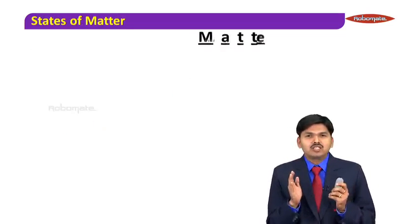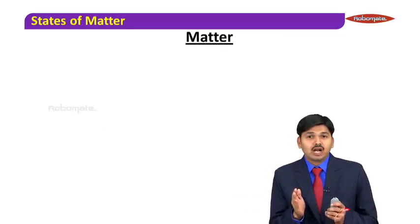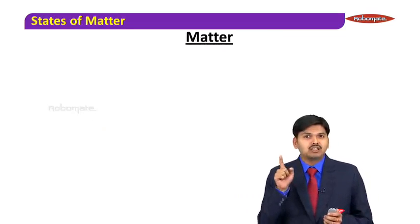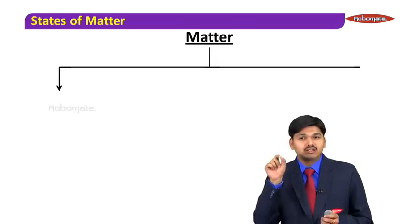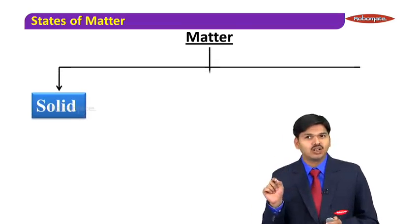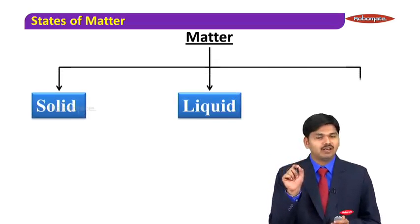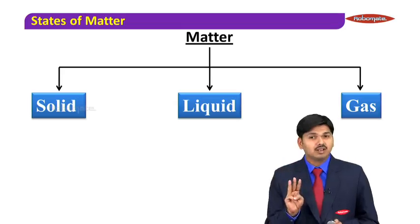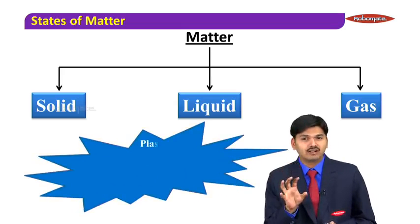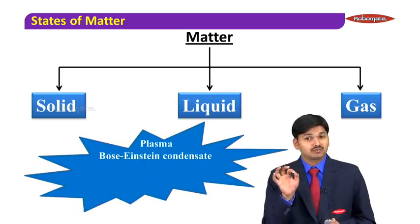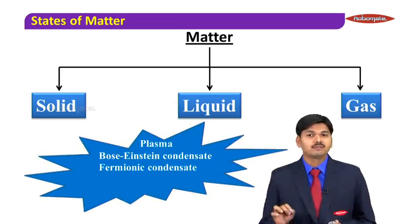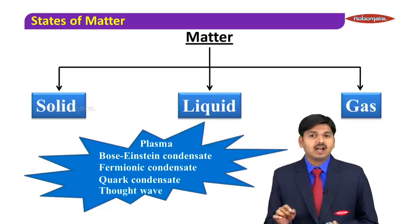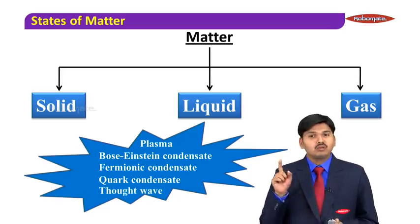If I concentrate on these, I come across a new classification — matter is going to get classified into three different types: solid, liquid, and gases. Along with these three, we have some more states of matter like plasma, Bose-Einstein condensate, fermionic condensate, quark condensate, and thought wave.